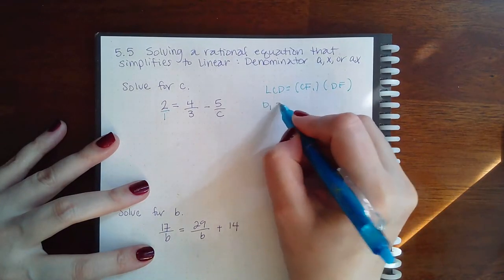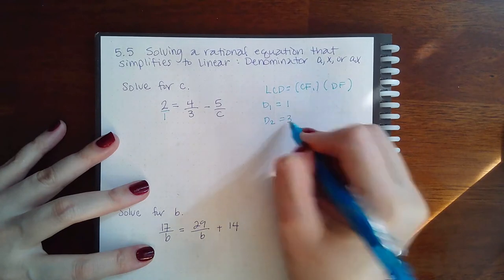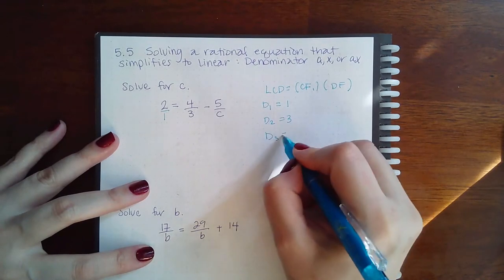And so then, I have denominator 1, which is 1. I have denominator 2, which is 3. And I have a denominator 3, which equals C.